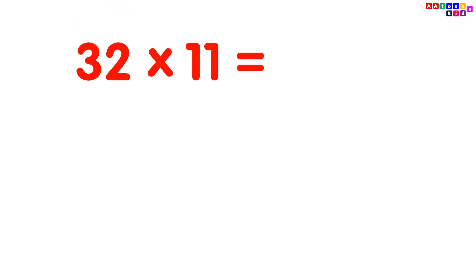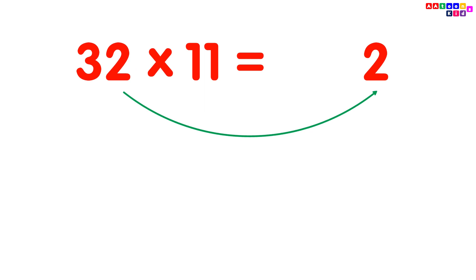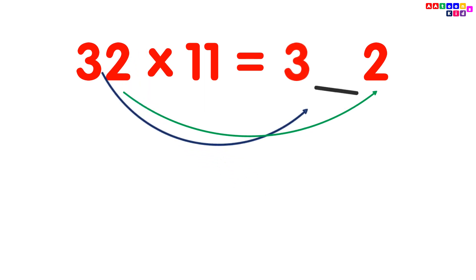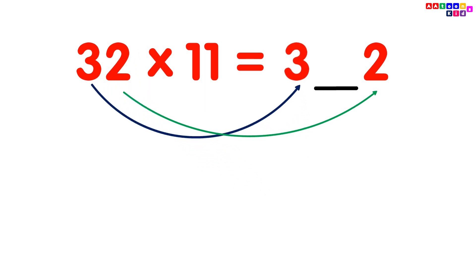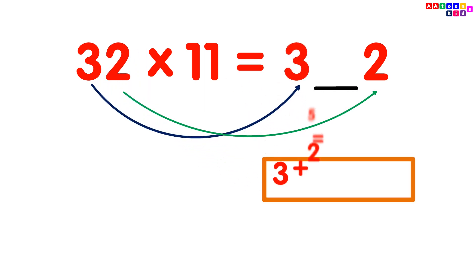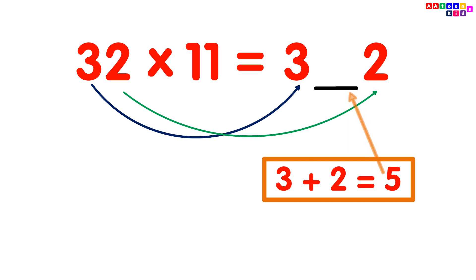32 multiplied by 11. Simply write the digits 3 and 2. Then add the digits: 3 plus 2 equals 5. Put the 5 between digits 3 and 2, and you will get your answer 352.